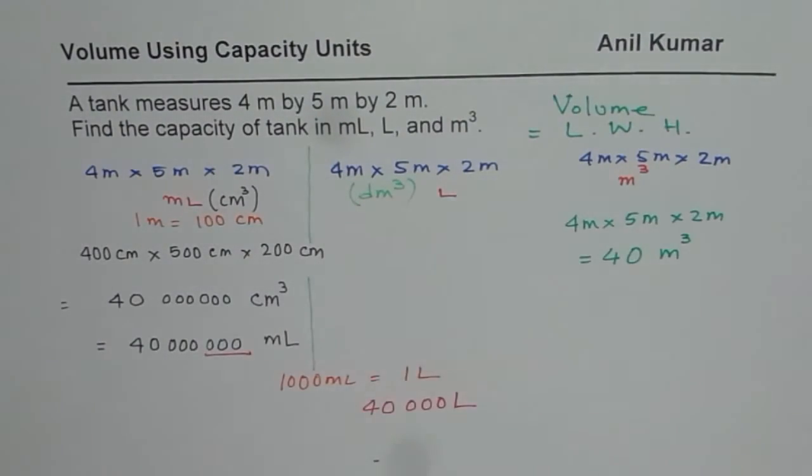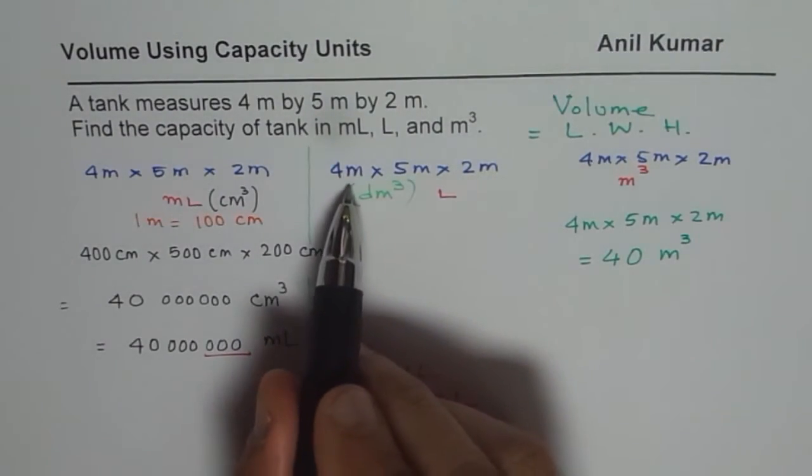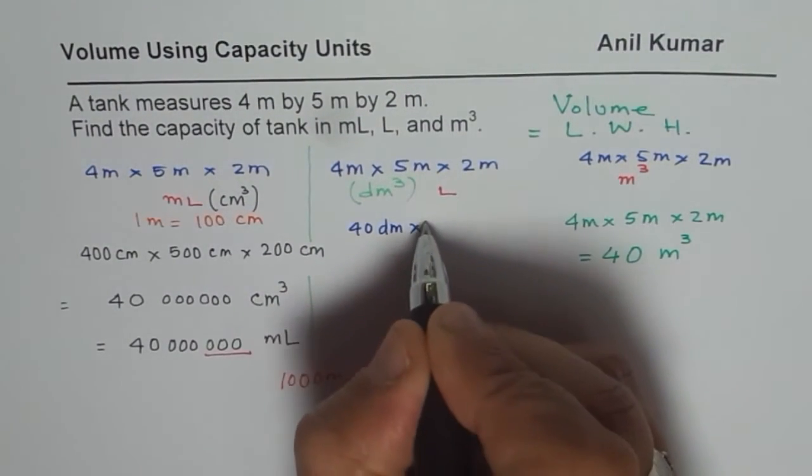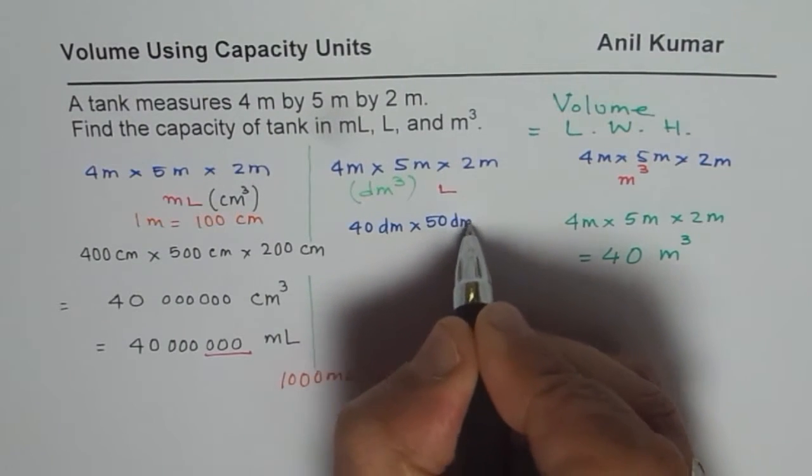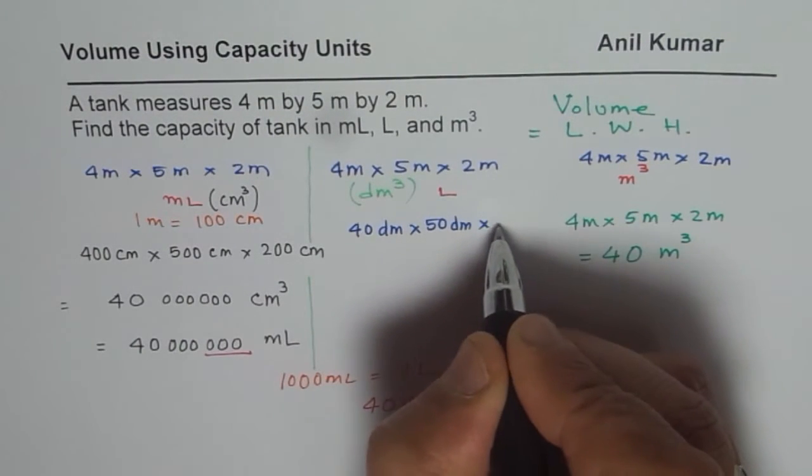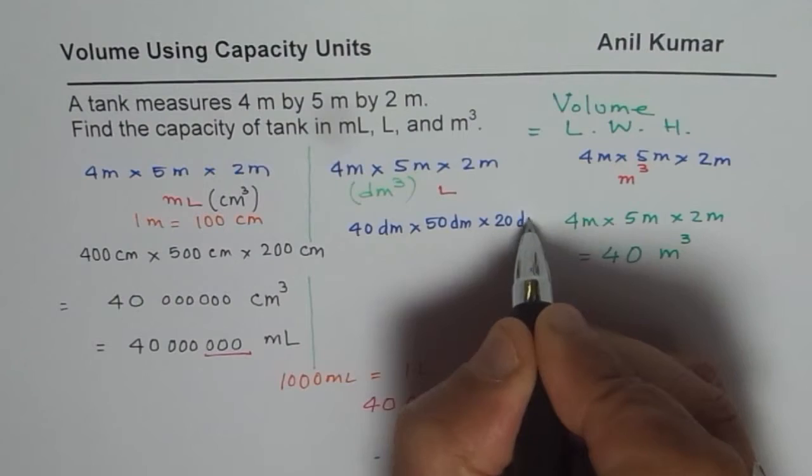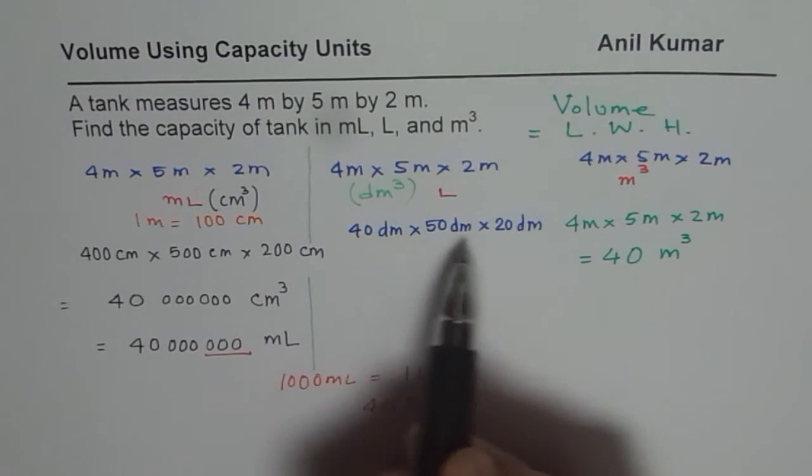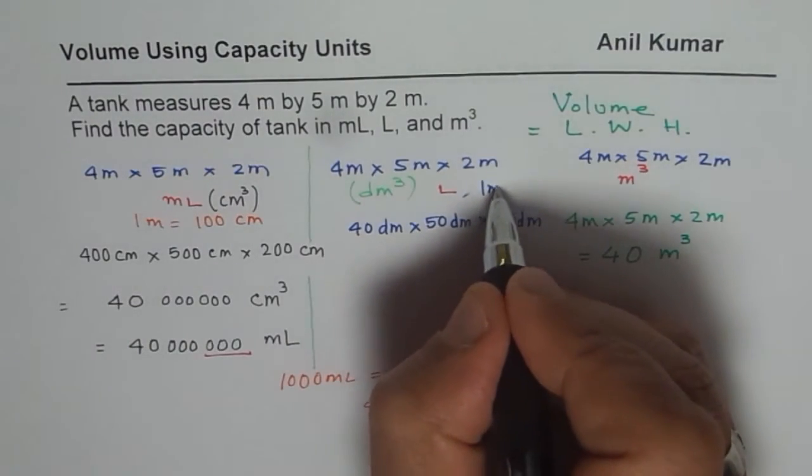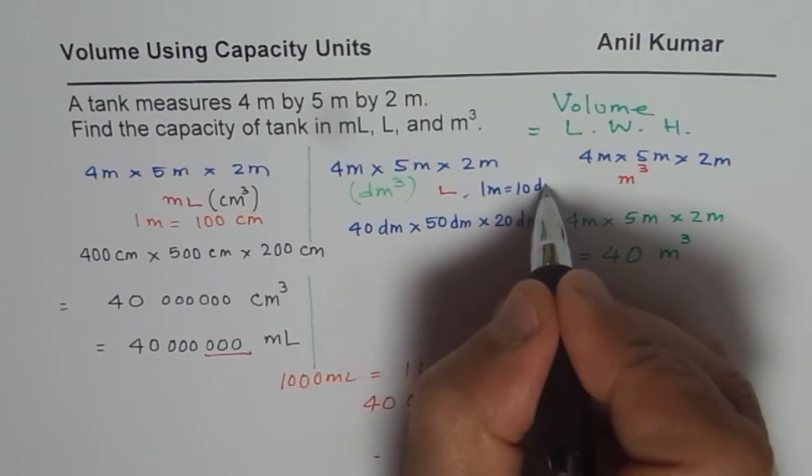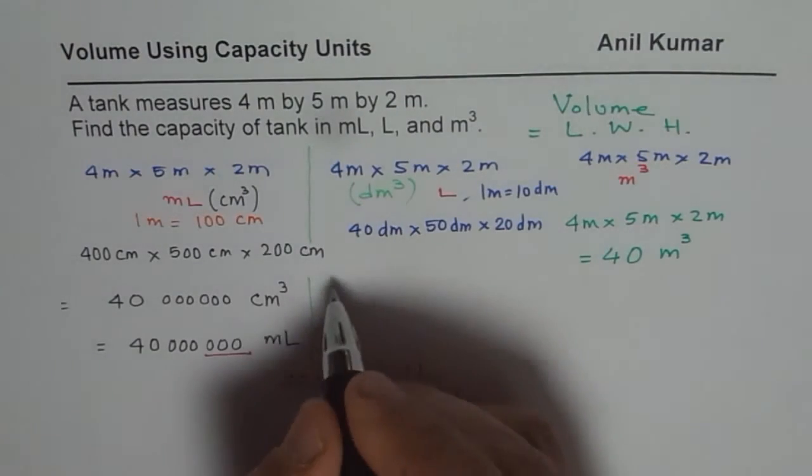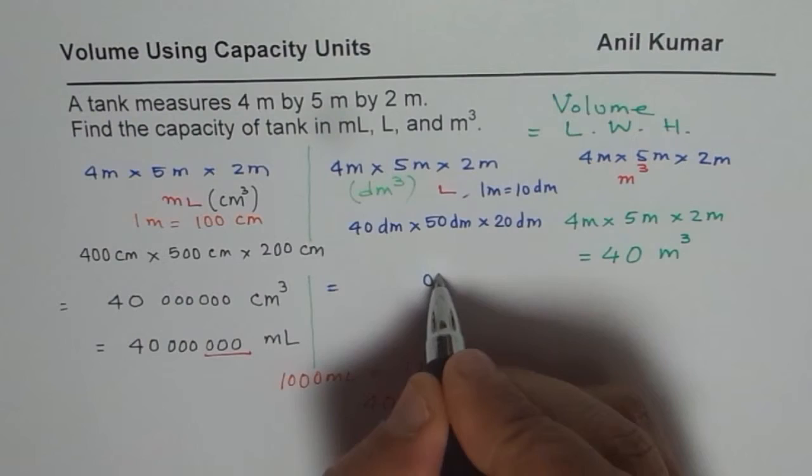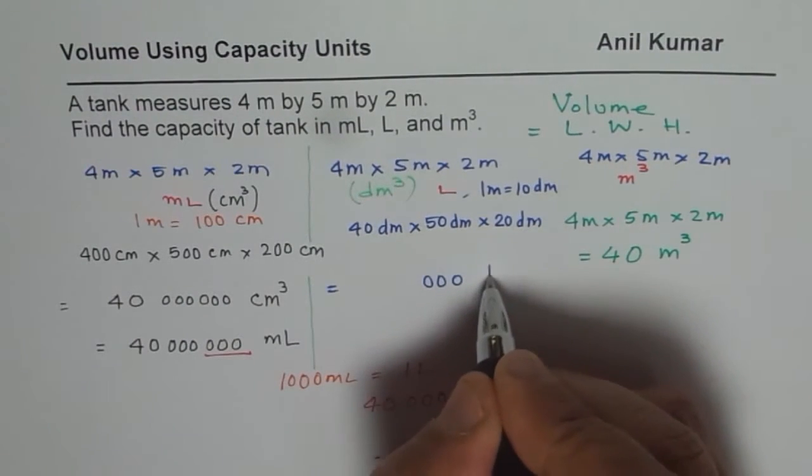Let me write them in decimetres. We know 1 meter is 10 decimetres. So we could write this as 40 decimetres times 50 decimetres times 20 decimetres. 1 meter is 10 decimetres. So that is the conversion factor. If you multiply these 3, you get 1, 2, 3 zeros. That is 3 zeros decimetres cube.